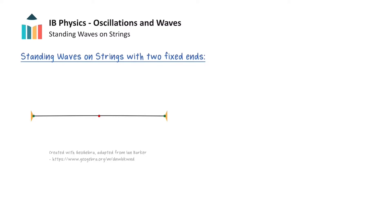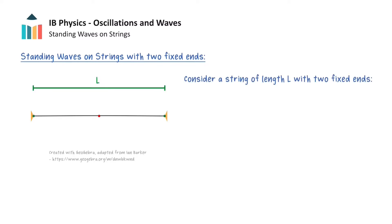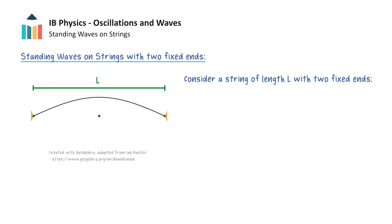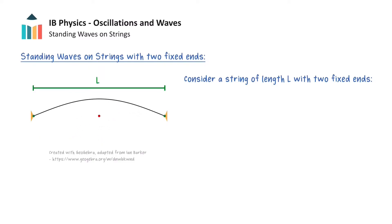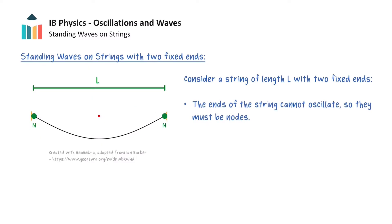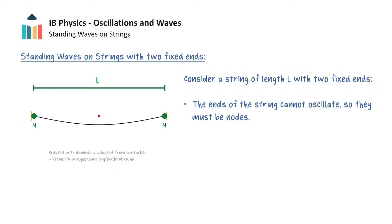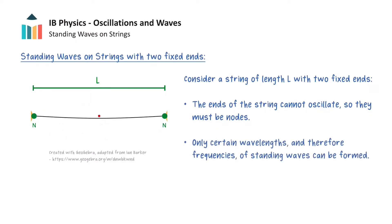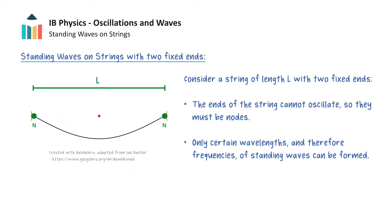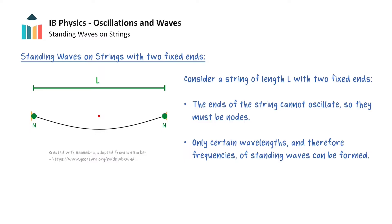We will now look at standing waves on strings. Let's consider a string of length L with two fixed ends. A wave that travels in one direction towards one fixed end of the string will reflect back from the fixed end and the standing wave will be formed. The ends of the string cannot oscillate, so any standing wave that is formed must have nodes at both ends. These are known as end conditions or boundary conditions, which place very specific restrictions on the wavelengths and therefore frequencies of standing waves that can be produced on a string with a fixed length. The standing waves formed on strings apply to string musical instruments such as a guitar.